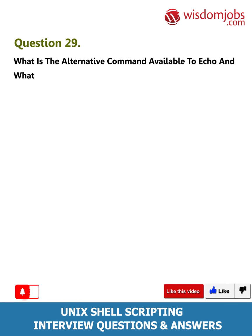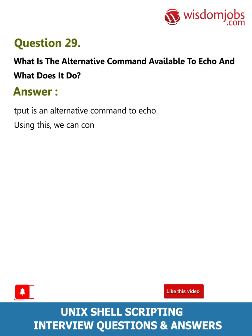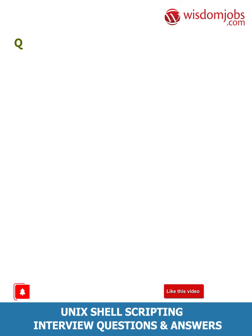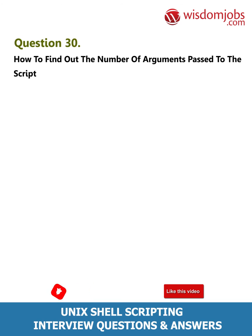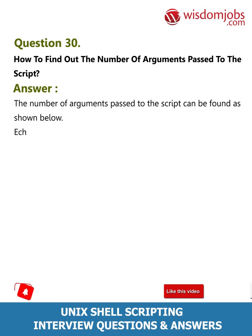Question 29: What is the alternative command available to echo and what does it do? Answer: 'tput' is an alternative command to echo; using this we can control the way in which the output is displayed on the screen. Question 30: How to find out the number of arguments passed to the script? Answer: The number of arguments passed to the script can be found using: echo $#